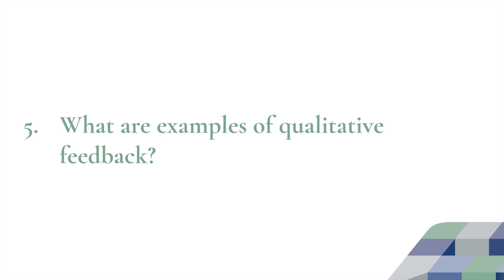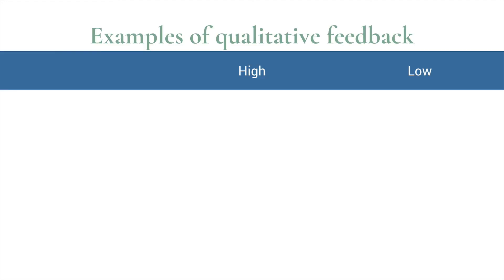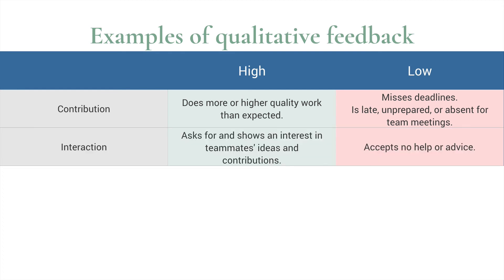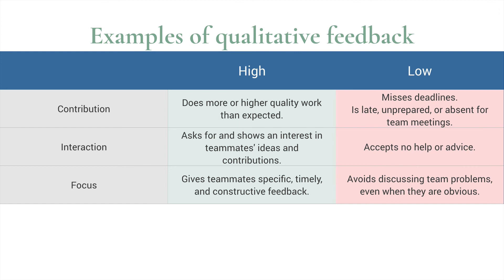What are some examples of the qualitative feedback you'll provide? The qualitative feedback is where you're giving evidence in support of the ratings on the one-to-five scale that you have already provided. For example, on contribution — does the student do more or higher quality work than expected? A low rating: you might say the student misses deadlines, is late, unprepared, or absent for team meetings. For interaction with other team members, a high rating would note evidence that the student asks for and shows an interest in other teammates' ideas and contributions, while a low rating might note that they accept no help or advice. Here are a few more examples.